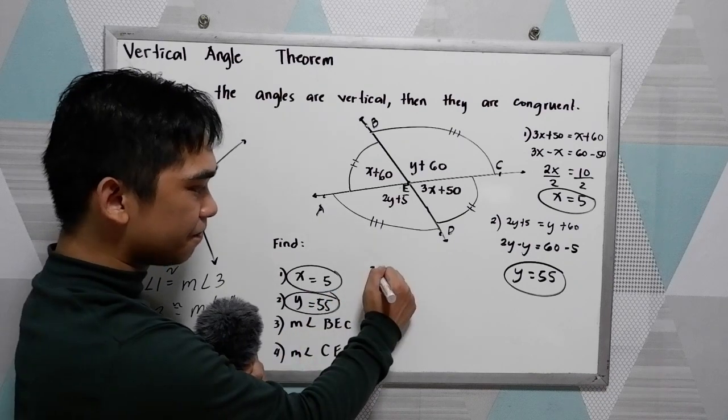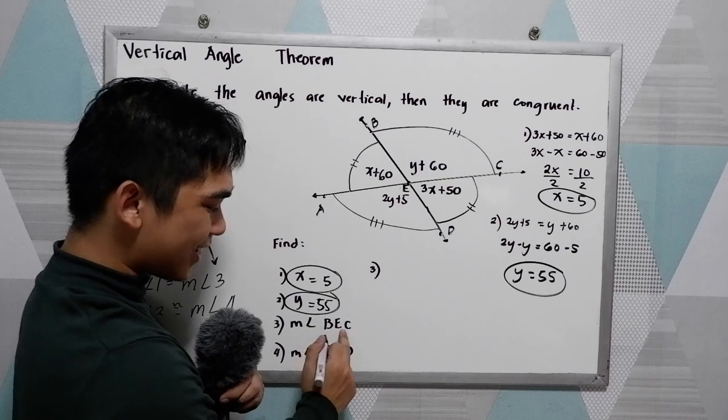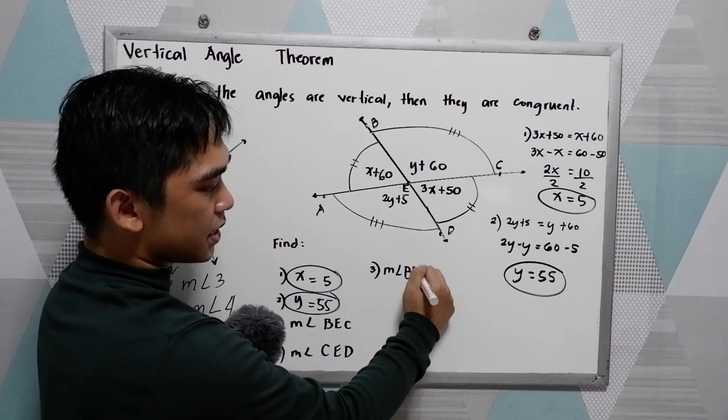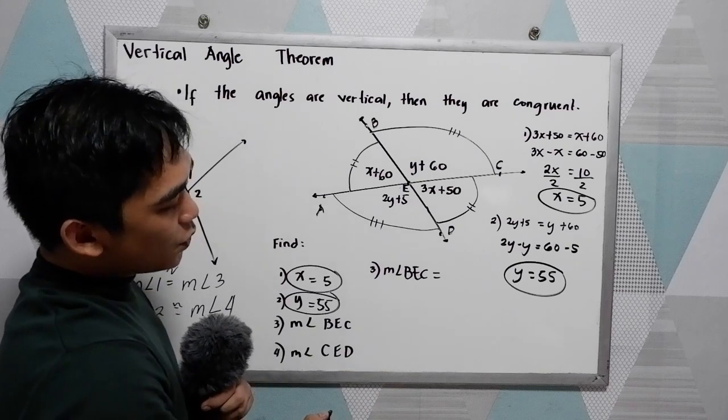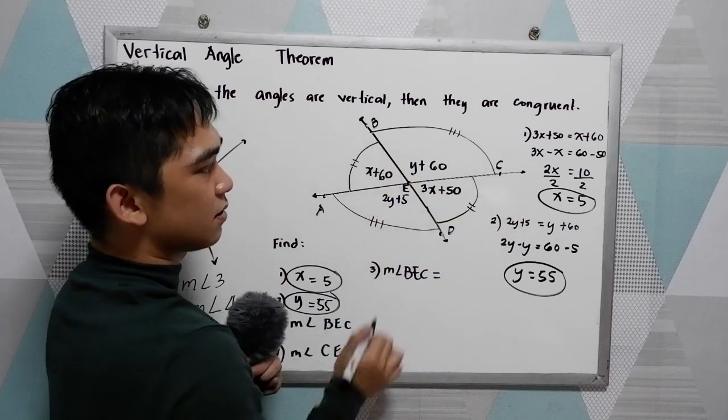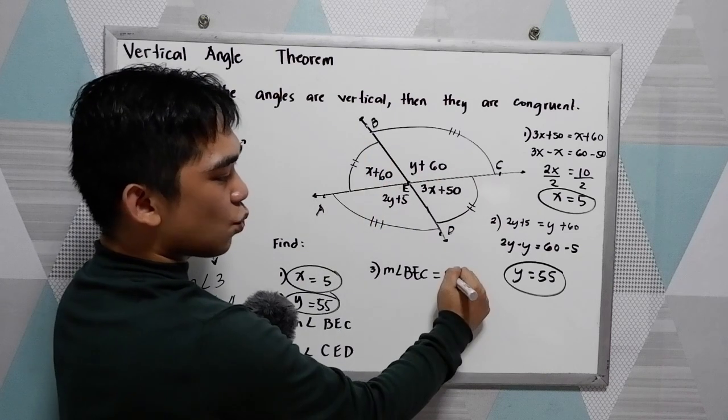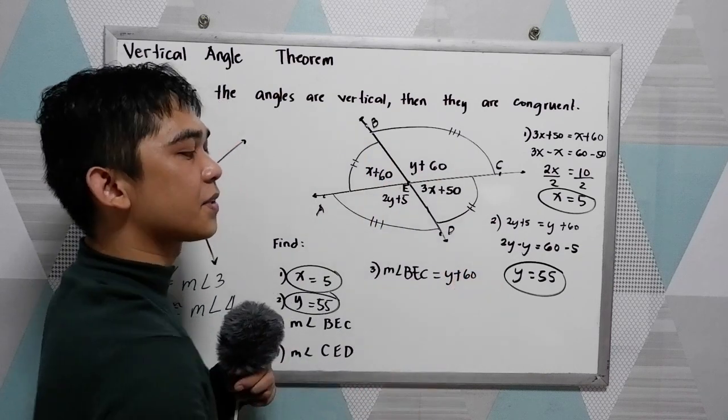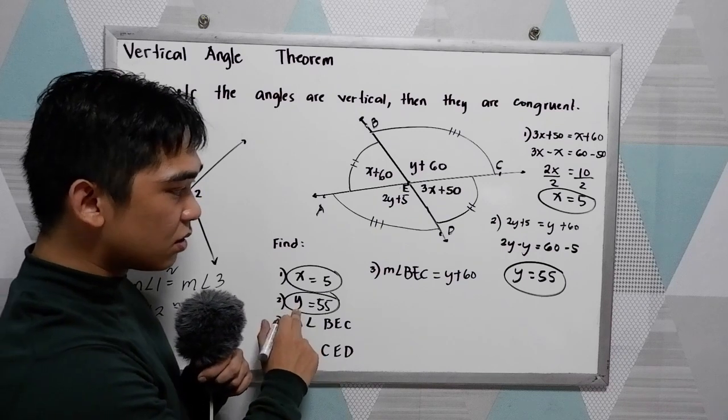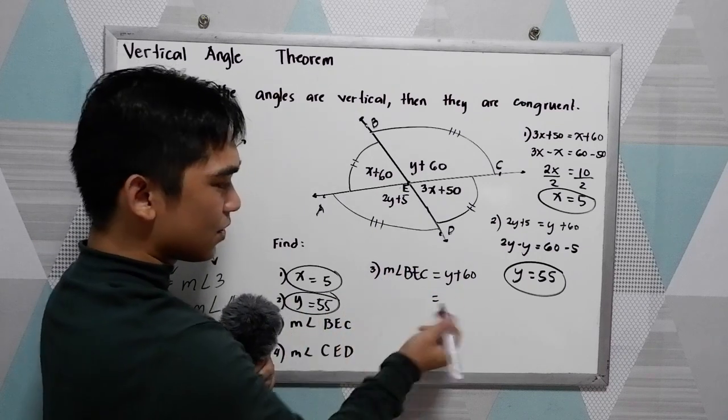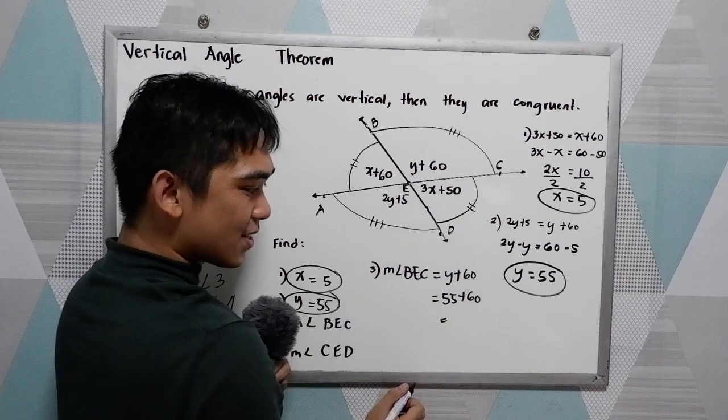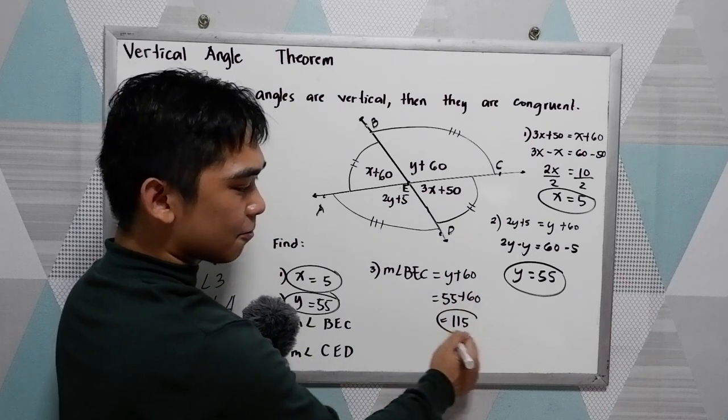Now, number 3, measure angle BEC. We know that measure angle BEC is y plus 60. Since we have a value for y now, just substitute: 55 plus 60, that is 115 degrees.